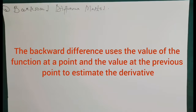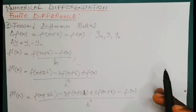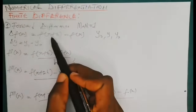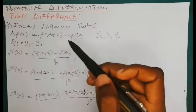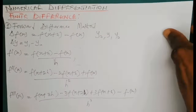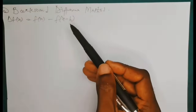Now let's look at the backward difference method. The backward difference uses the value of the function at a point and the value at the previous point to estimate the derivative. By formula, delta f(x) equals f(x) minus f(x − h). Compared to the forward difference — which adds h to move forward — the backward difference subtracts h to move behind, using f(x) and the previous point f(x − h).